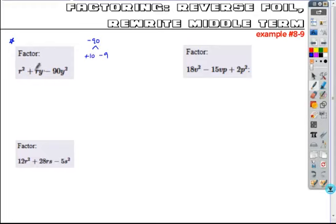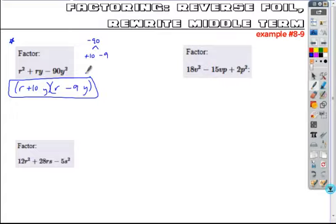Negative 9 and a positive 10. So because this is a leading coefficient of 1, we start with r's as our first terms. Because we have another variable y, we put that as our second terms, and then we use these numbers. Plus 10 and minus 9 are the coefficients of that y, and it gives you your factors.